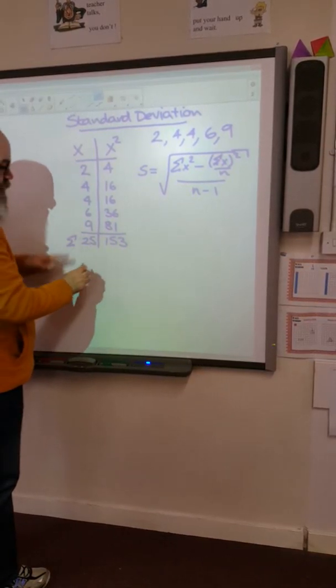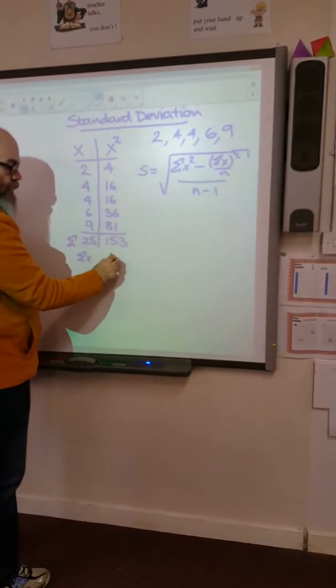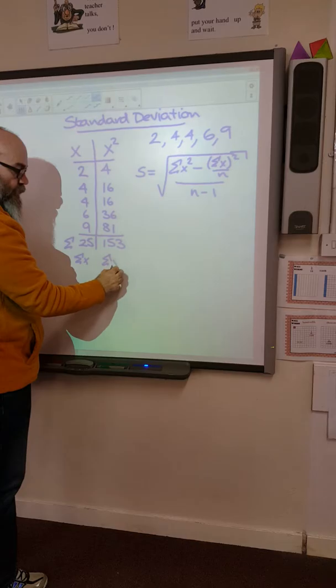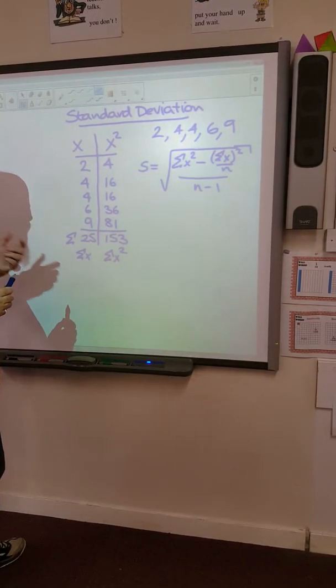And the little squiggles which you see, which look a little bit like backwards 3's in the formula, are in fact the Greek letter sigma, and they mean sum up or total.